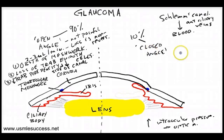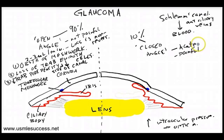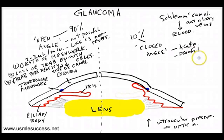Closed angle glaucoma is usually acute, because patients suddenly have extreme pain in their eyes, so this is very painful. Because of this, they usually go see the doctor fairly quickly, as opposed to open angle where it happens slowly over time with no pain and vision is gradually lost. This type is oftentimes caught a lot sooner and is more manageable.